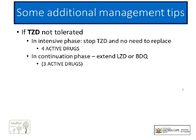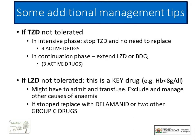Much more problematic is omitting linezolid, which is a key drug in the first six months. If the Hb drops under 8, it will be necessary to admit the patient and one might even have to transfuse. If linezolid has to be replaced, one can use delamanid, or if delamanid is not available, it must be replaced with at least two active Group C drugs.